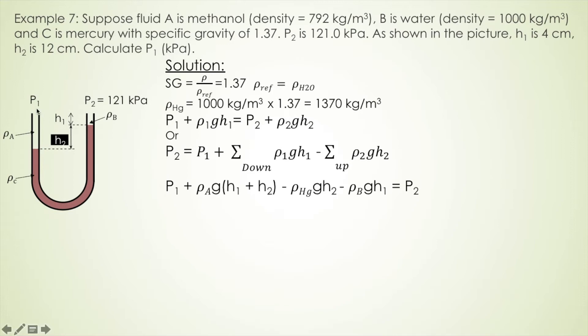Then this case starting from P1, and liquid A go down, so we use plus sign. And the deflection of liquid A is H1 plus H2. And manometer liquid, it goes up, so we use minus sign. And density of mercury, we just found out, times the gravity times the deflection of mercury is H2.